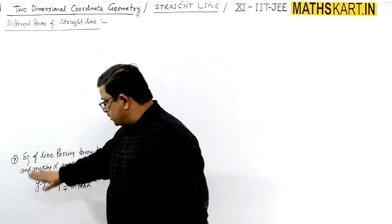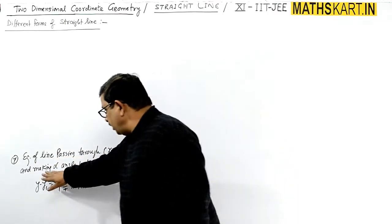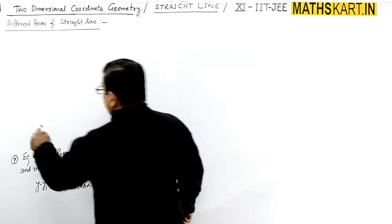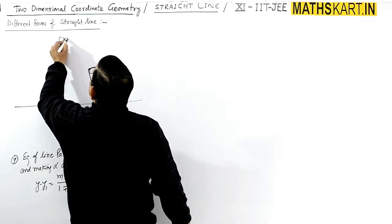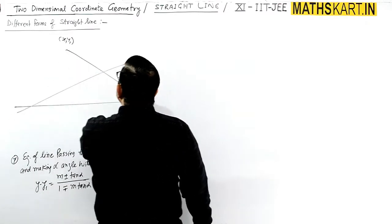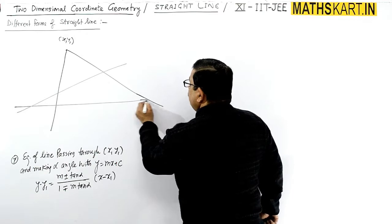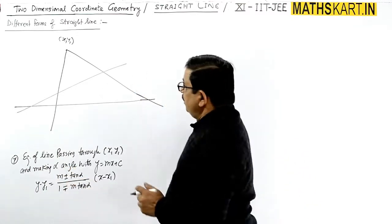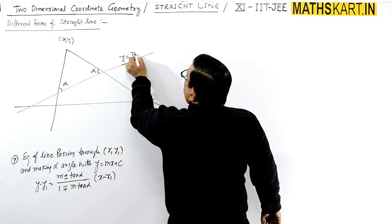This is the 7th problem: the equation of a line passing through point (x1, y1) making angle alpha with a given line. The diagram shows this line, point x1, y1, and the other line making angle alpha. The given line is y = mx + c.